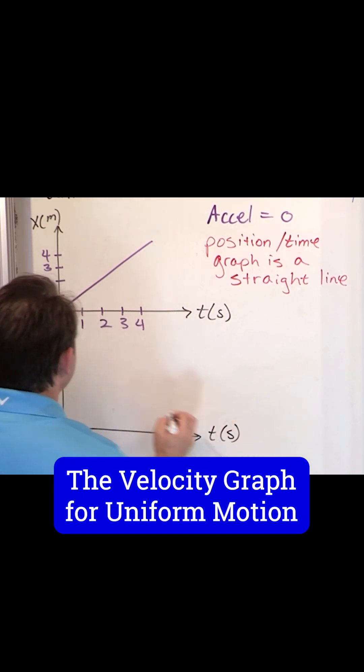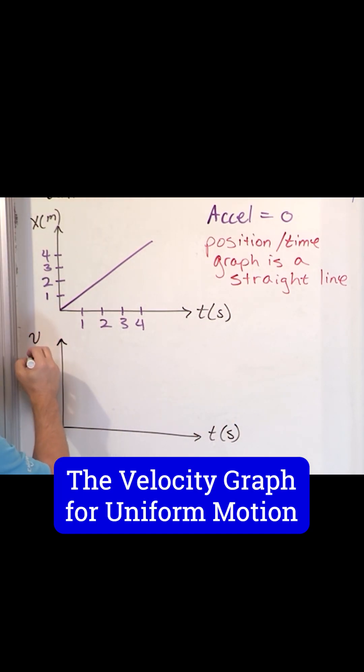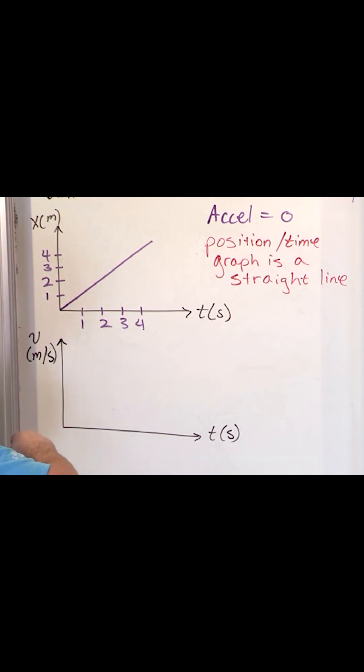Let's look at what the velocity graph would look like for this curve. So this is a velocity in meters per second. So this is the position for uniform motion is a straight line, that's what we're saying.